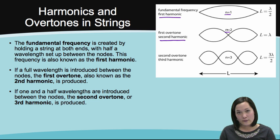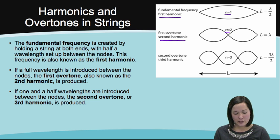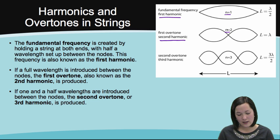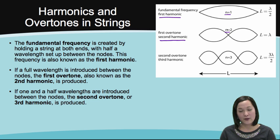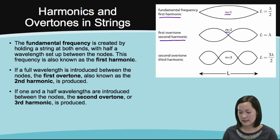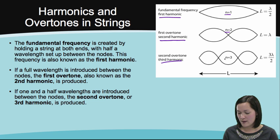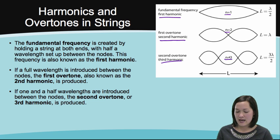If one and a half wavelengths are introduced between the nodes, the second overtone, or third harmonic, is produced. Third harmonic, n equals 3.